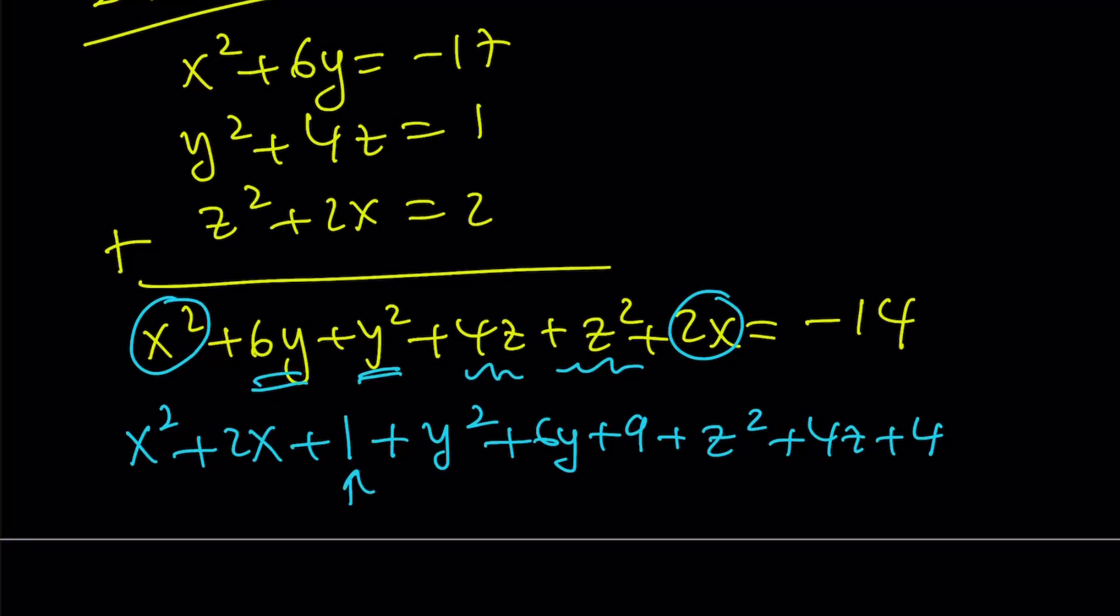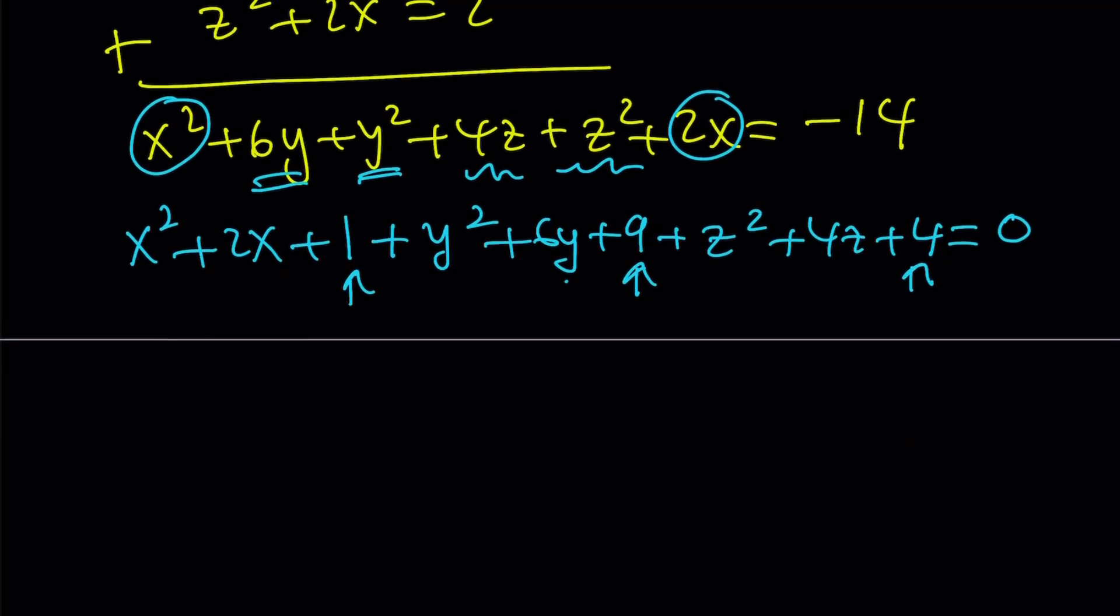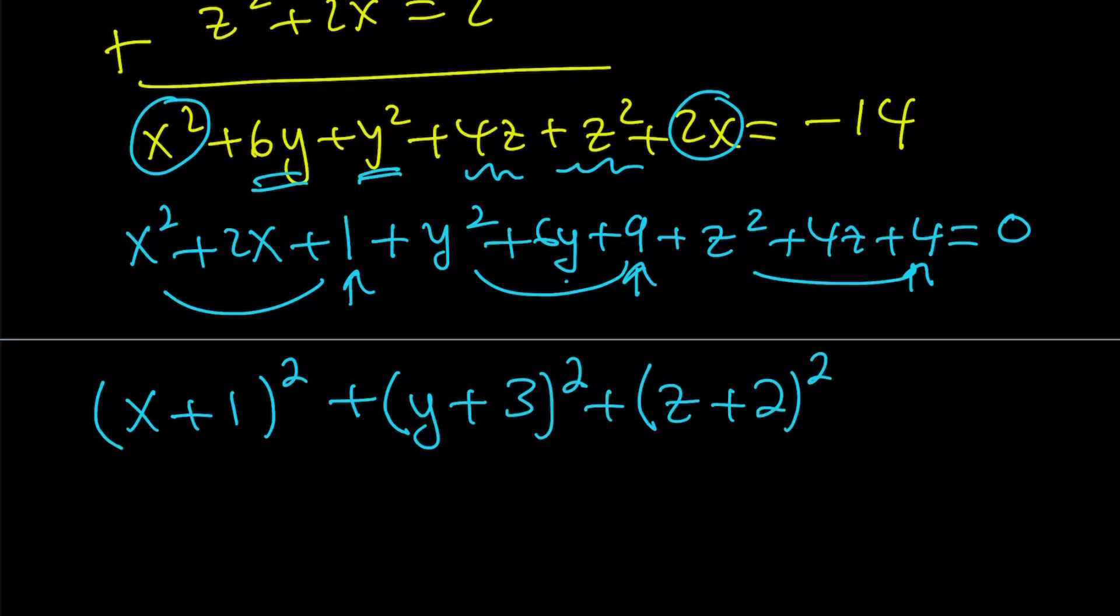And then z squared, we have a z squared and we have a 4z. That is going to require a 4. Now notice that I added 1, I added 9, and I added 4. That is equivalent to adding 14 to both sides. And when you add 14 to negative 14, you're going to get 0. Okay, great. Now when I do this complete the square thing, notice that I have now a sum of 3 squares. Let's go ahead and write it as perfect squares.